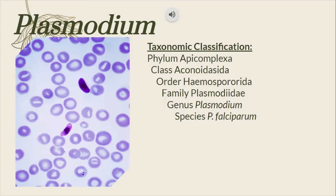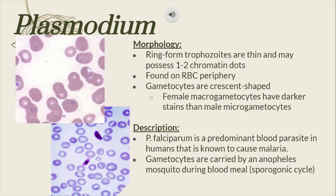Here we will find the taxonomic classification for Plasmodium. Plasmodium has ring-form trophocytes that are thin and may possess 1 to 2 chromatin dots. They are usually found on the red blood cell periphery and the gametocytes are crescent-shaped. Female macrogametocytes have darker stains than male microgametocytes. Plasmodium falciparum is a predominant blood parasite in humans known to cause malaria. Gametocytes are carried by an Anopheles mosquito during a blood meal or sporogonic cycle.